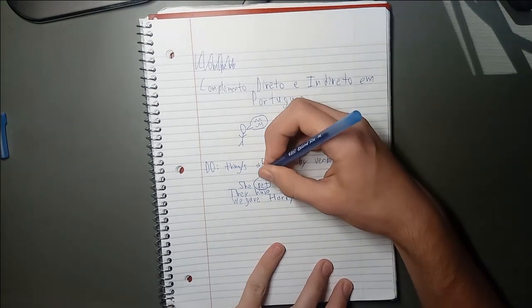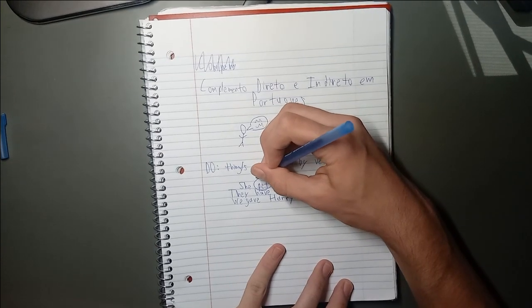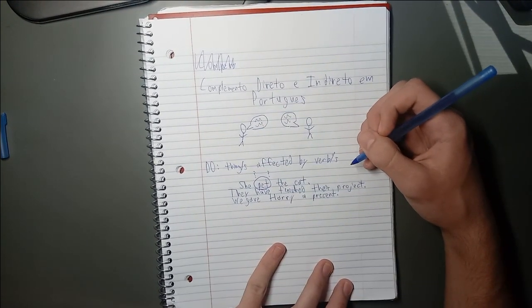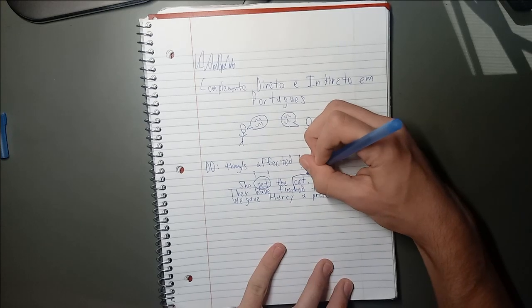Obviously, in this instance, it's the cat that is being pet. So, a cat is the direct object of the sentence. It's directly receiving the effect of the verb, which is, in this case, being pet.